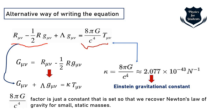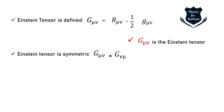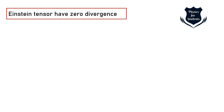The Einstein tensor G_μν is defined as R_μν minus half R·G_μν. The Einstein tensor is symmetric, just like other tensors, and represents spacetime curvature. This curvature is due to matter distribution flowing through space and time — the so-called gravitational force is nothing but the curvature which lets matter move.